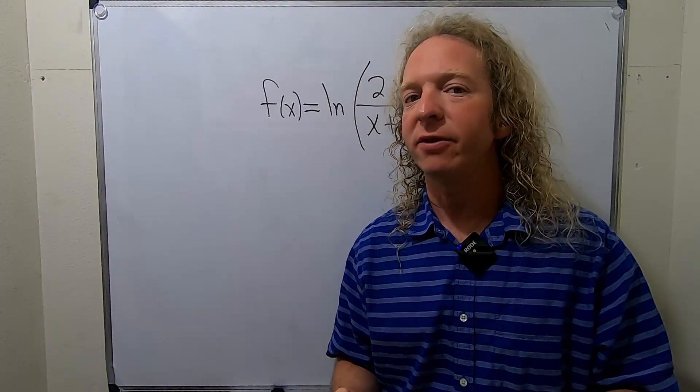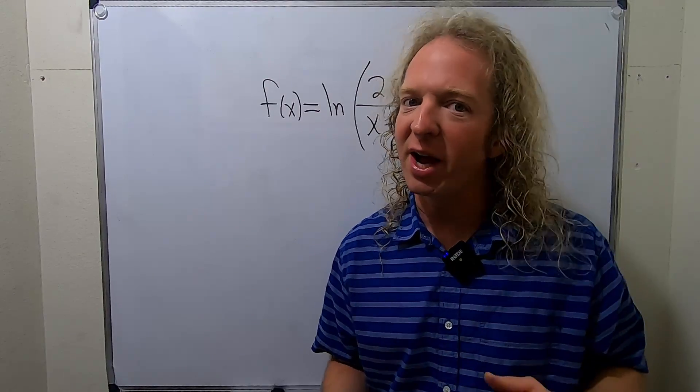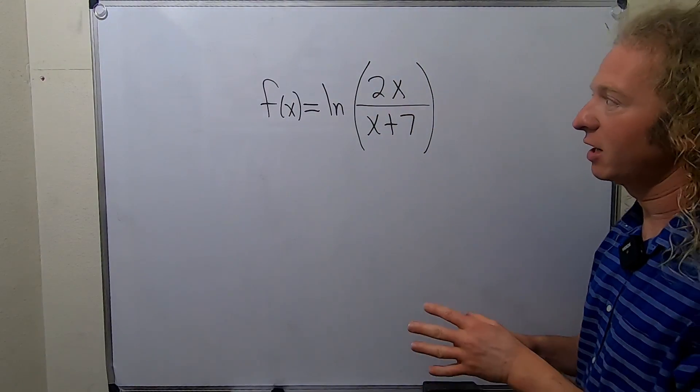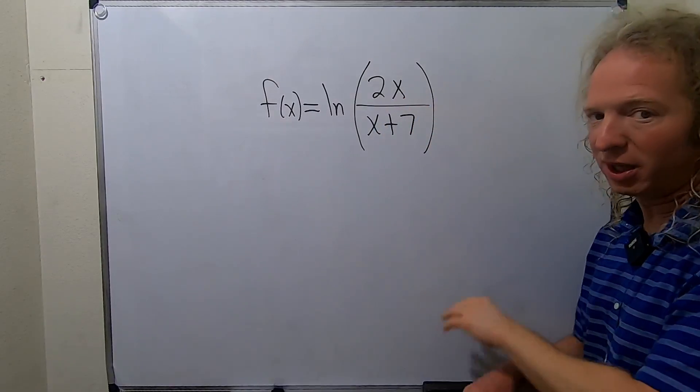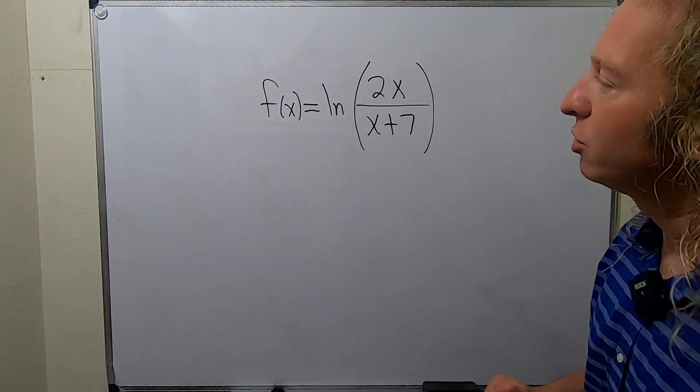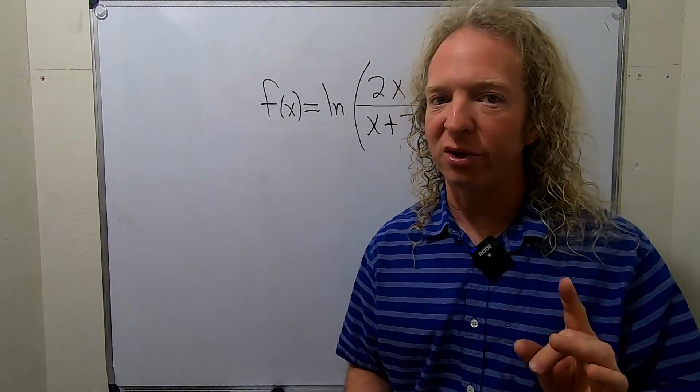So remember, when you take the derivative of the natural log of x, it's just 1 over x. But here, if you do that, it'd be 1 over this times the derivative of this. This is a quotient rule. That is no fun. So what we're going to do is we're going to use one of the properties of logarithms.